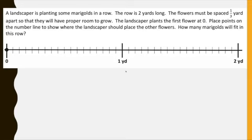So, now thinking about some vocabulary. Again, the origin is where the 0 is on the number line. So, that would be right here. 0 is the origin. And then the coordinate tells you the distance from 0 to the location on the number line. So, these are the coordinates here, right? These numbers and the symbols are coordinates on the number line. So, this tells you the distance from 0 to the location on the number line. We have a word problem that focuses on a number line and finding the coordinates on this number line. So, here we have a landscaper is planting some marigolds, which are a type of flower, in a row. The rows are two yards long. You'll see that here. Here's our row. And flowers must be spaced one third apart so that they will have proper room to grow. The landscaper plants the first flower at 0. Okay? Place points on the number line to show where the landscaper should place the other flowers. And then the question is, how many marigolds will fit in this row? Okay.